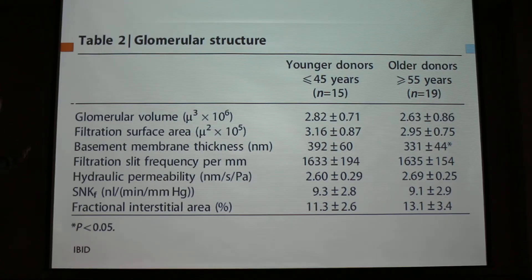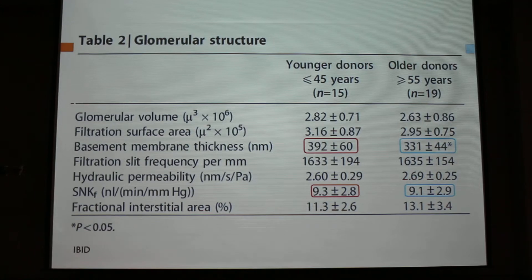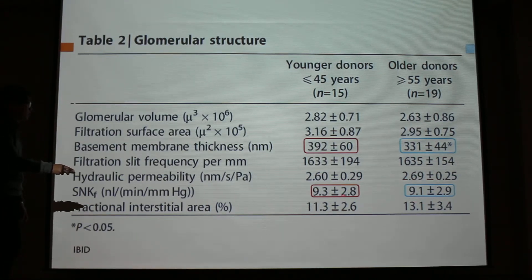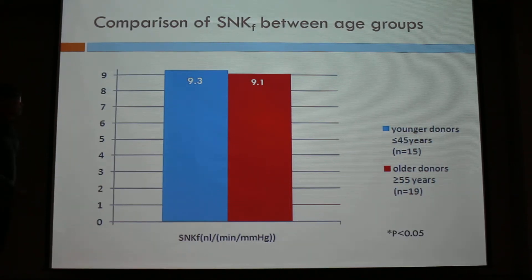Last, I'm going to tell you about the glomerular filtration coefficient of a single nephron, SNKF. This table is about the glomerular structures. You can see that the only significant difference in values is the basement membrane thickness. However, the basement membrane thickness does not affect GFR very much. You can see that SNKF — the filtration coefficient for a single nephron — is not significantly different between the two groups. The bar graph confirms these two groups are not very different, so there was no significant difference in SNKF.